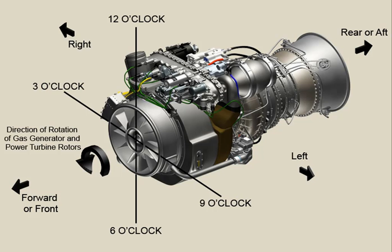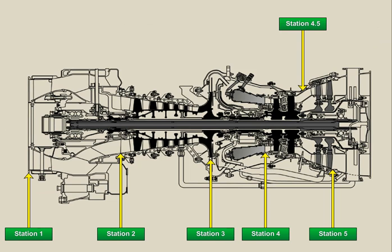All clock positions referenced in the engine manual and in this training are as viewed from the aft of the engine looking forward, unless otherwise noted. In order to identify certain locations and parameters for temperature and pressure in the engine, a station designation system is utilized to coincide with various parts locations for easy recognition. Established station designations and examples of engine parameters are identified on the T700-GE-701 Delta engine, depicted below.